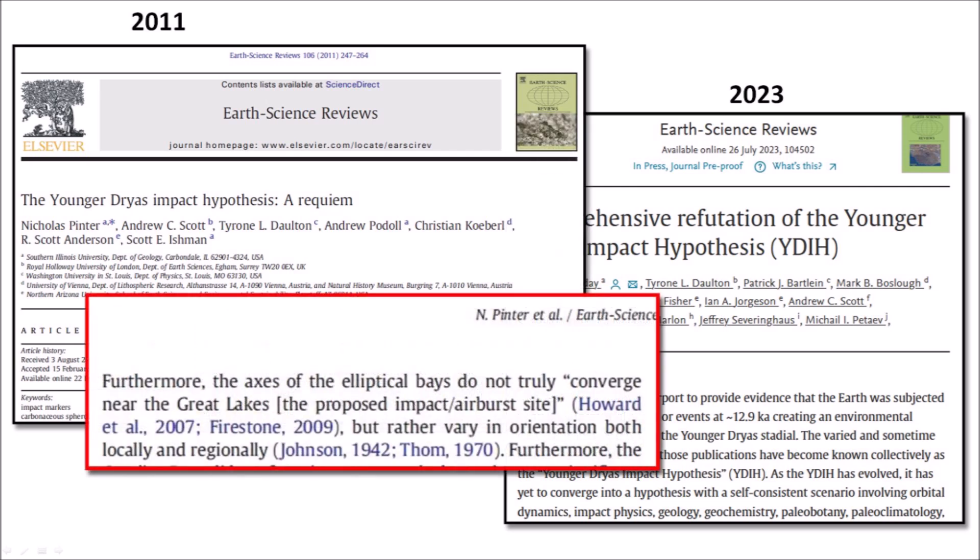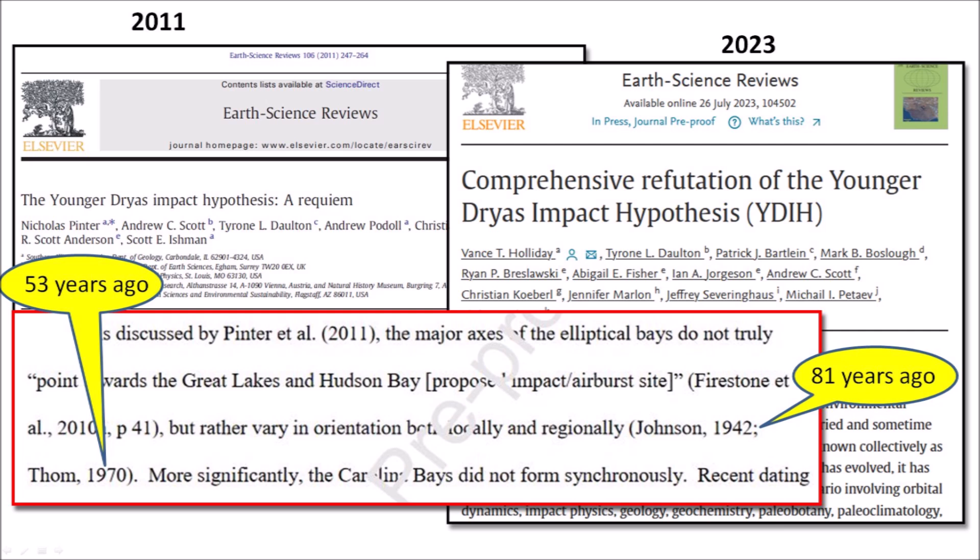The 2011 paper by Pinter and six co-authors says the following when discussing the Carolina Bays: furthermore, the axes of the elliptical bays do not truly converge near the Great Lakes, but rather vary in orientation both locally and regionally. Two references are cited — the 1942 book by Johnson and the 1970 paper by Thumb — published more than 50 years ago, at a time when LiDAR imaging was not available and the Nebraska Rainwater Basins had not been discovered yet. The paper published in 2023 by Holliday and 11 co-authors just repeats this claim using the same two outdated references.